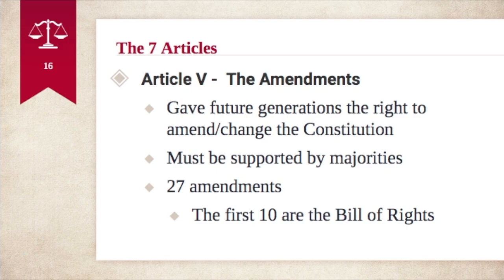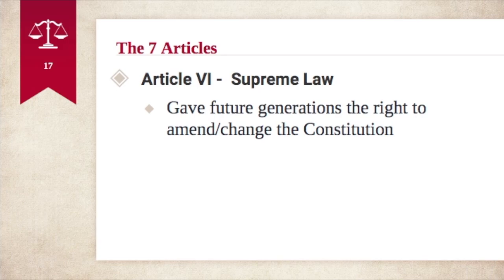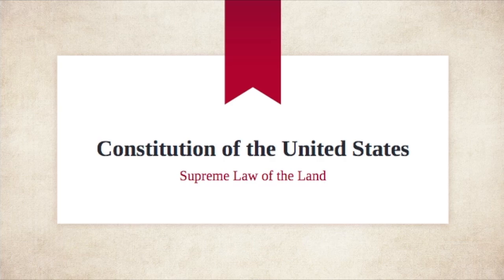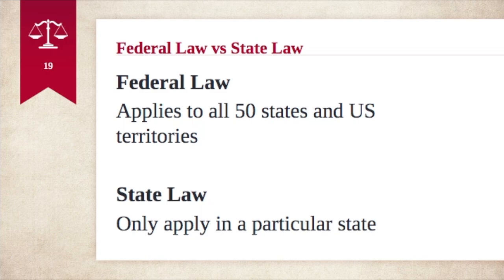Article six is the supreme law, which basically states that when state laws conflict with federal laws, the federal laws take priority. The Constitution of the United States is the supreme law of the land, and Article Six establishes this. Federal laws apply in all 50 states and U.S. territories, whereas state laws only apply in particular states. When they conflict, federal laws take priority.